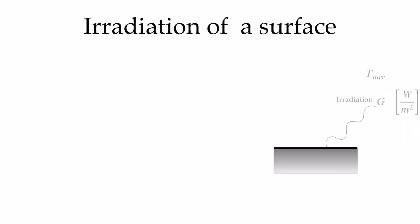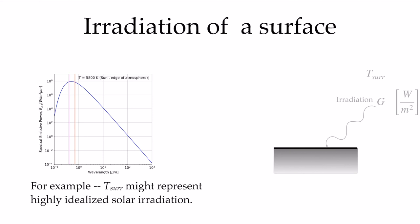First, we're going to talk about the irradiation of a surface. The irradiation is the radiation that is incident upon a surface. That irradiation is coming from some other surface elsewhere, which is at the temperature we often talk about as T surroundings. Therefore, the spectral nature of the radiation incident upon the surface will have the spectral characteristics of radiation coming from T surroundings. One such example is we often idealize the irradiation coming from the sun, at least to the outer edge of the atmosphere, as that of a black body at about a temperature of 5,800 Kelvin.